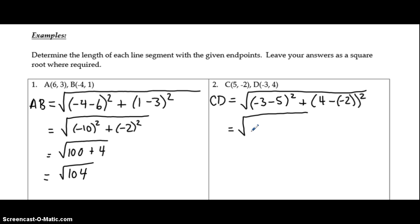Negative 3 minus 5 gives me negative 8. 4 minus a negative 2 gives me 6, so I'm just going to put the 6 down without brackets since it's a positive number. Negative 8 times negative 8 gives me positive 64. 6 times 6 is 36. So in this case we get the square root of 100, and 100 is a perfect square number. If we take the square root, we get 10. So we can simplify that right up to 10.